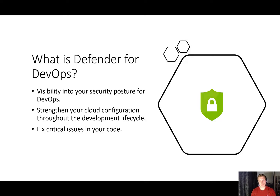Defender for DevOps is a service in Microsoft Defender for Cloud which helps security teams and developers manage the security in their DevOps processes across multi-pipeline environments. It helps your developers protect your apps and resources right down from your code, all the way to your deployed resources in the cloud. Defender for DevOps can identify issues in your code which can be correlated with other cloud security insights to help you fix those issues. Using Defender for DevOps you can identify vulnerabilities in your code such as misconfigurations, exposed secrets within your code, and potential vulnerabilities caused by open source dependencies.